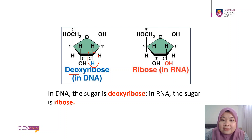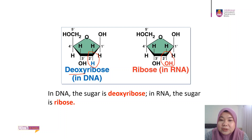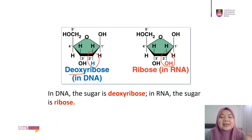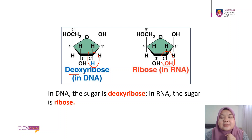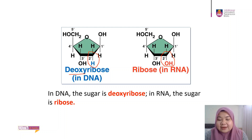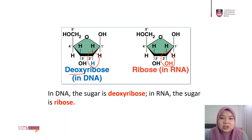Ribose has an oxygen at carbon number two, which is why the name is simply ribose. Deoxyribose lacks this oxygen — that's the 'deoxy' prefix. This is the number one difference between DNA and RNA: the presence of two different pentose sugars in their structure.